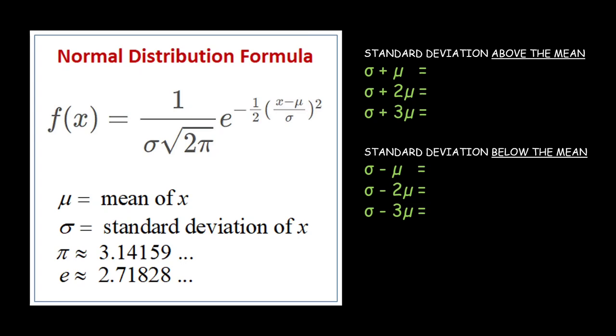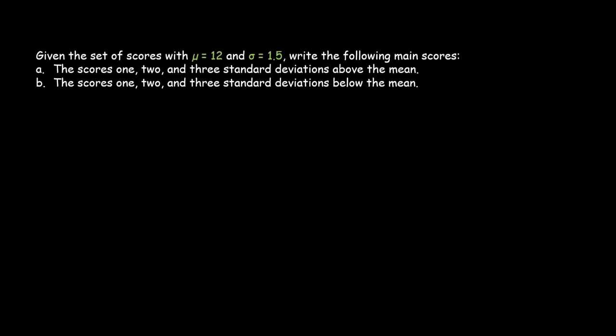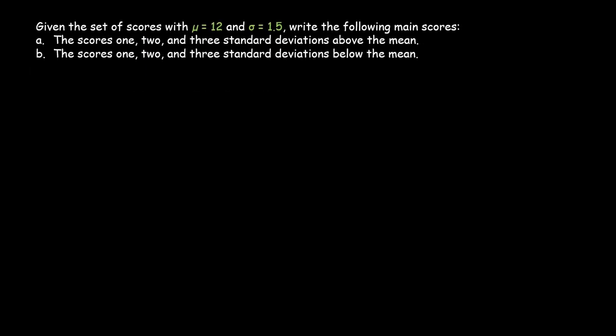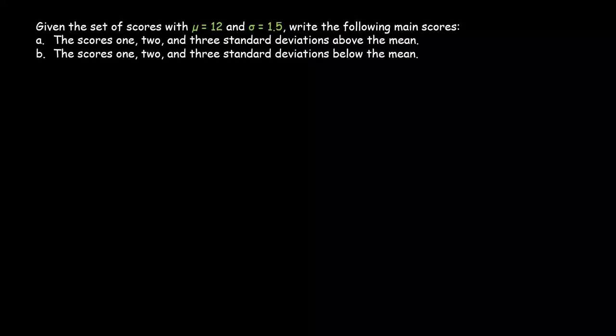Now we have the first example. Given a set of scores with mean 12 and standard deviation 1.5, write the following: the scores 1, 2, and 3 standard deviations above the mean, and the scores 1, 2, and 3 standard deviations below the mean. First, above the mean.